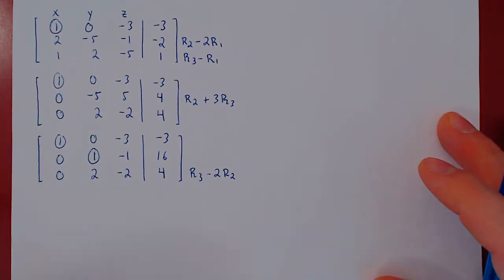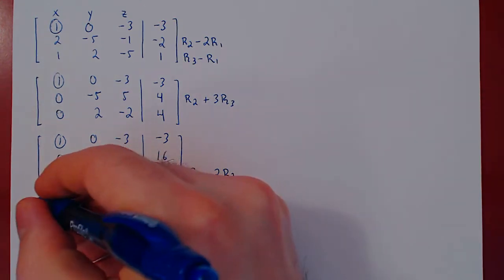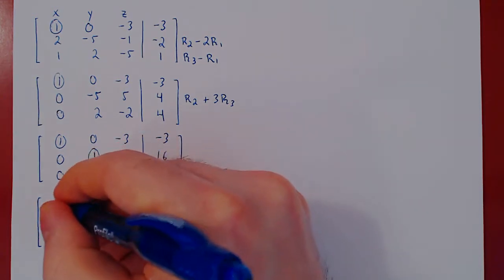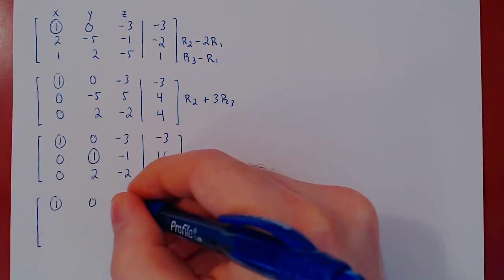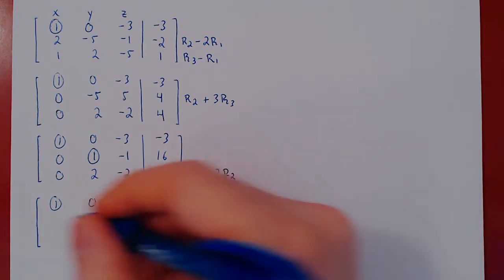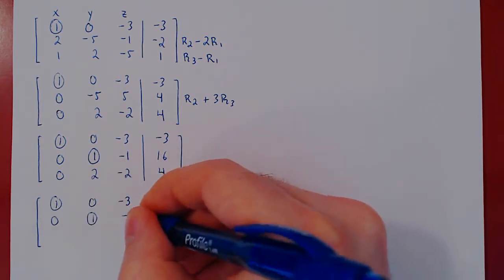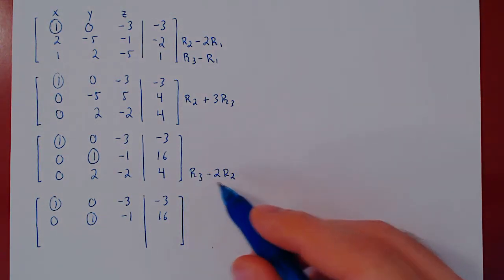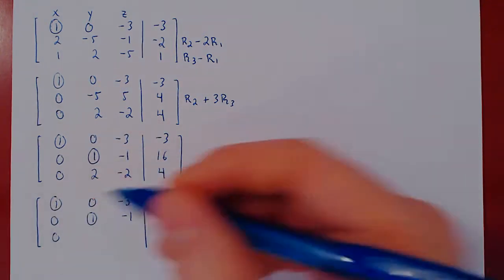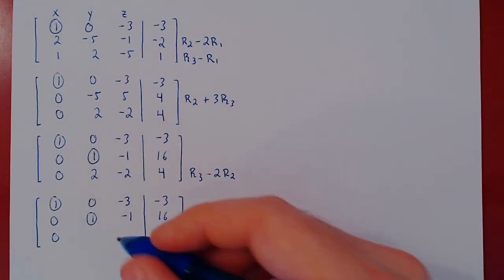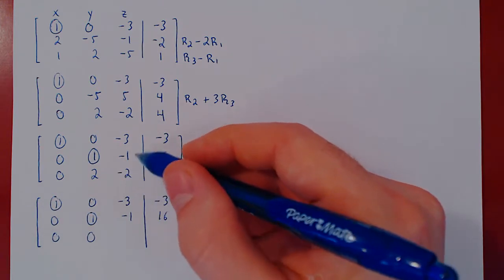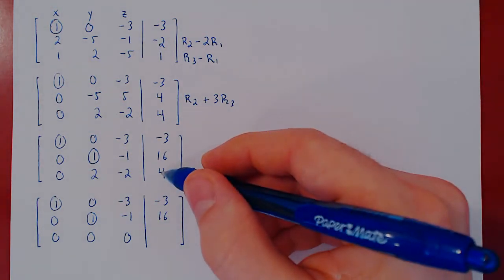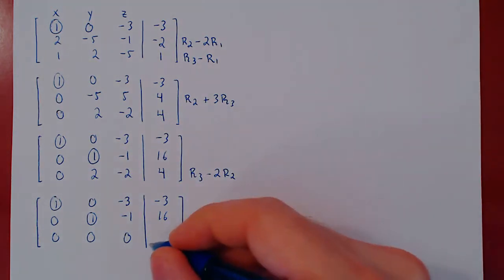Let's apply this operation and see what comes out. We are only changing the third row, so we can recopy the first two. Let's apply the row operation now. Row 3 minus 2 row 2. So 0 minus 0, 0. 2 minus 2, 0. Negative 2 times negative 1 is plus 2 is also 0. And 4 minus 2 times 16, minus 32, negative 28.